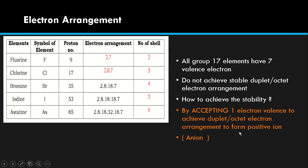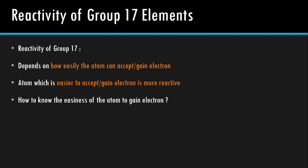Reactivity of Group 17 depends on how easy the atom can accept or gain electron — dia terbalik dengan Group 1. Kalau Group 1, reactivity depends on the easiness to donate. Lagi senang dia donate, lagi reaktif. Manakala Group 17, lagi senang dia accept, dia akan lagi more reaktif. So atom which is easier to accept is more reactive.